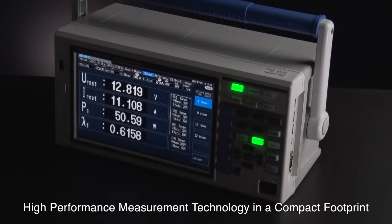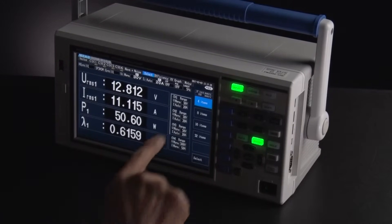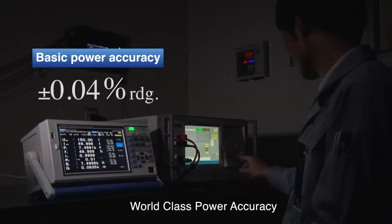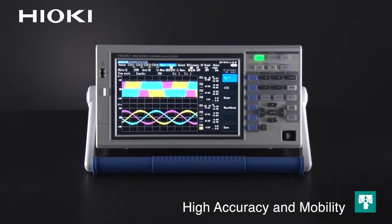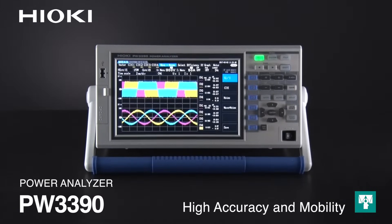Where can you find the latest in high-performance measurement technology housed in a compact footprint? One with world-class power accuracy specifications, only in the Hioki PW3390 Power Analyzer, delivering high accuracy and mobility in one single device.